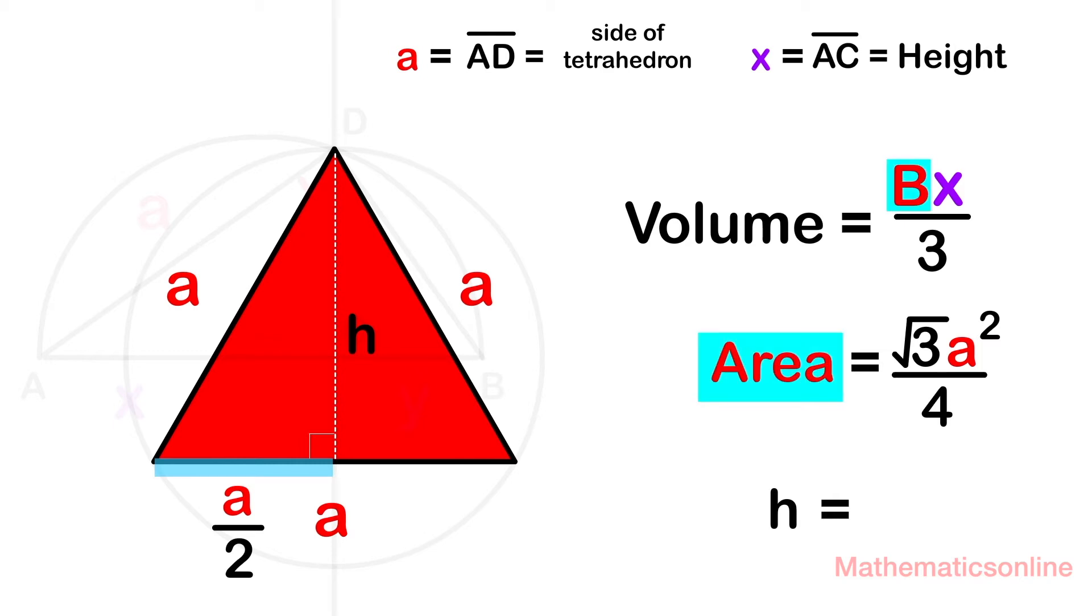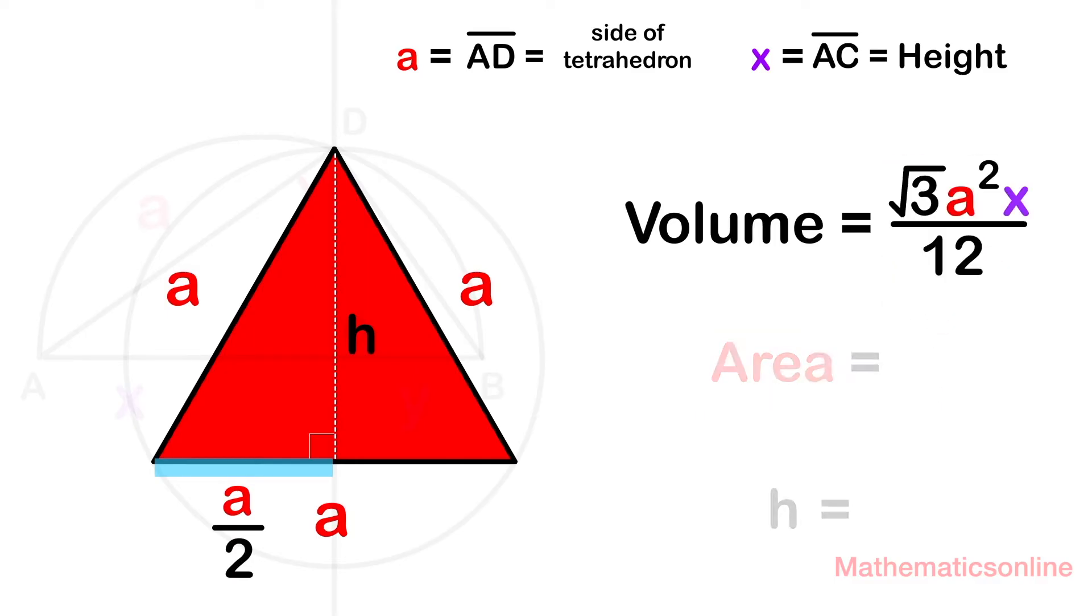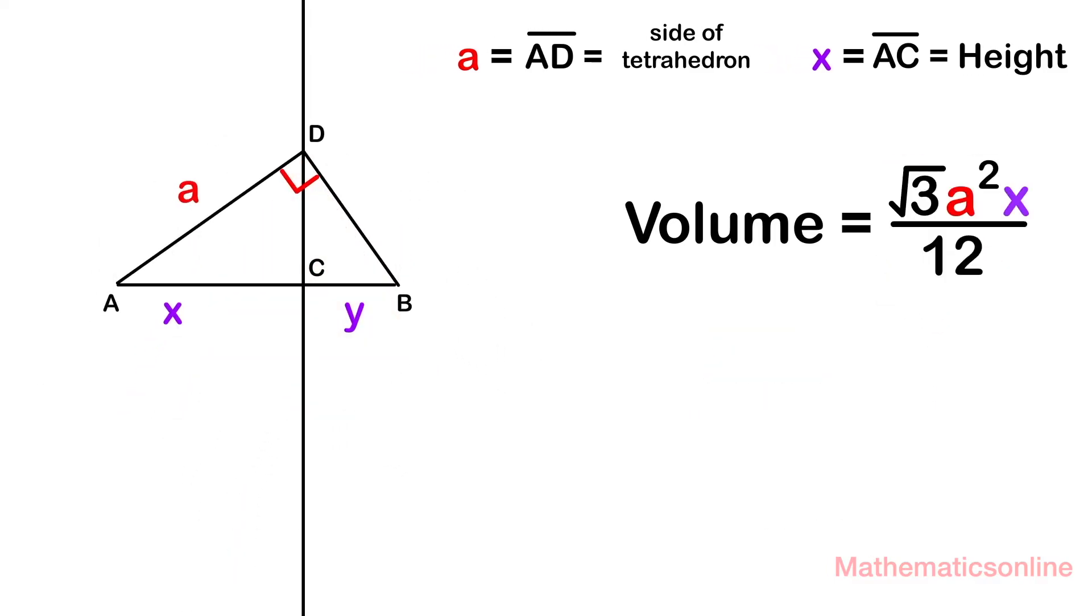And finally, let's substitute this into the volume formula. And so we have the volume is equal to the square root of 3 a squared times x divided by 12.